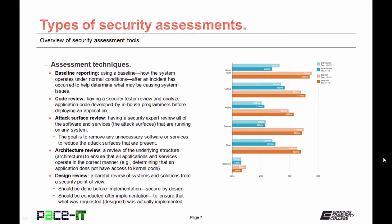Another assessment is the architecture review, which is a review of the underlying structure — also known as the architecture — to ensure that all applications and services operate in the correct manner, such as determining that an application does not have access to kernel code, which is not recommended. Finally, there is the design review — a careful review of systems and solutions from a security point of view. The design review should be done before the implementation of any system or solution, which is called being secure by design, and also after implementation to help ensure that what was designed was actually implemented correctly.